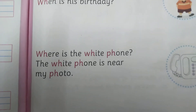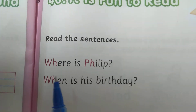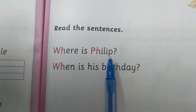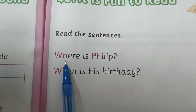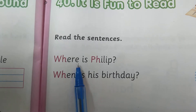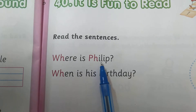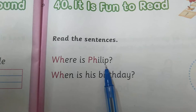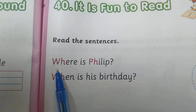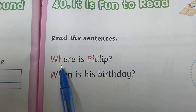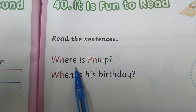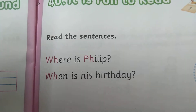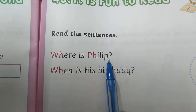Here, sentences are given and what we have to do here, we will read the sentences. See, this is all questions. W-H-E-R-E, where? I-S, is. P-H-I-L-I-P, Philip, and question mark. Where is Philip? Already you learned the W-H sound and with 'where' this word, we make questions. We ask, we make questions. Where is Philip?